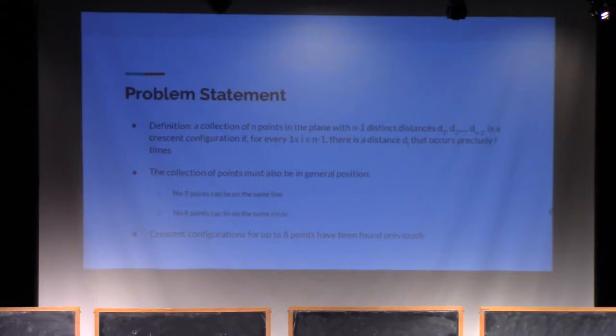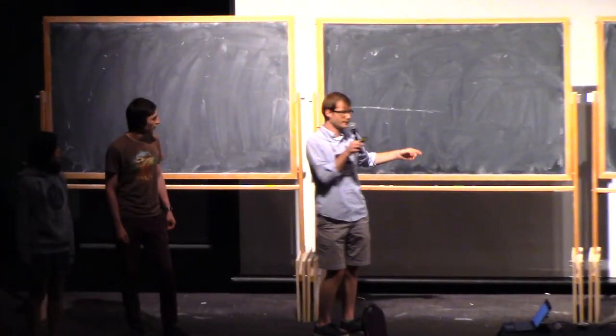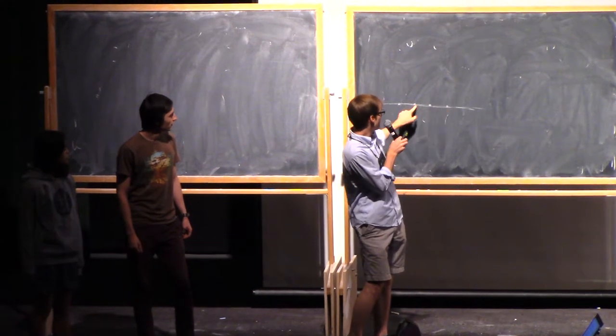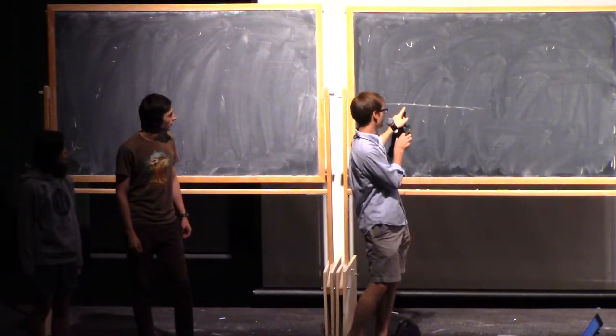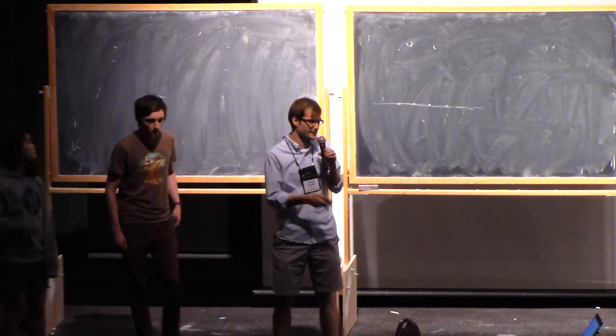We also have to require that the Crescent configuration satisfy the condition that no three points can lie on any line, and no four points can lie on any circle. Because otherwise, we would be able to construct arbitrarily large Crescent configurations, such as this line here, where if you equally space the points, you can have d3 occurring three times between each point, d2 occurring twice, and d1 occurring between the n points. You can create an arbitrarily large Crescent configuration doing that if you relax the condition.